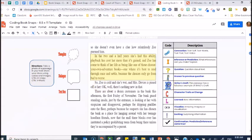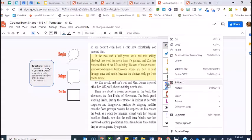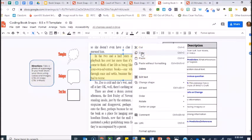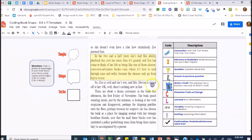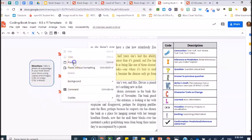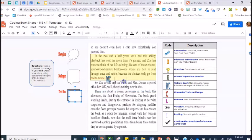In this example, I'm going to choose writer's craft as my coding mark. So I'm simply copying and pasting this here. And then I may use a text box, which I can copy and paste to explain my thinking.